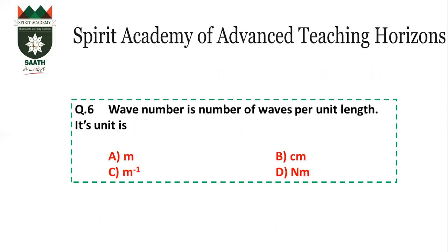Question number 6: The unit of wave number is asked. Wave number is the reciprocal of wavelength. The unit of wavelength is meter, so the unit of wave number will be per meter. The answer is C.